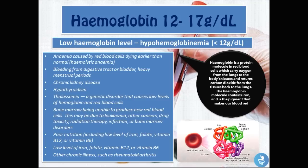A lower than normal hemoglobin level, also called hypohemoglobin anemia, refers to any value below 12 grams per deciliter. Causes include hemolytic anemia where red cells die earlier than normal, bleeding from the digestive tract, bladder, or heavy menstrual periods, chronic kidney disease, hypothyroidism, thalassemia, bone marrow inability to produce new red blood cells due to leukemia, other cancers, drug toxicity, radiation, or infections, and poor nutrition including low iron, folate, vitamin B12, or vitamin B6.